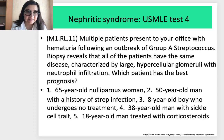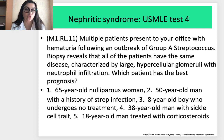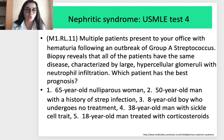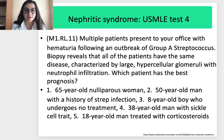USMLE Test 4 — nephritic syndrome: Multiple patients present with hematuria following an outbreak of group A streptococcus. Biopsy reveals large hypercellular glomeruli with neutrophil infiltration. Which patient has the best prognosis? Options: (1) 65-year-old nulliparous woman; (2) 50-year-old man with a history of strep infection; (3) 8-year-old boy who undergoes no treatment; (4) 38-year-old man with sickle cell trait; (5) 18-year-old man treated with corticosteroids.